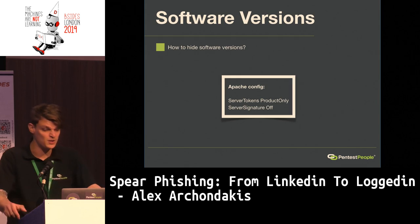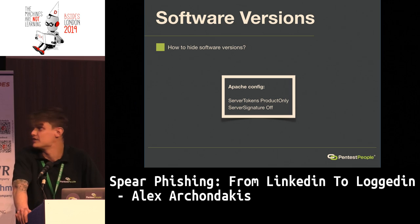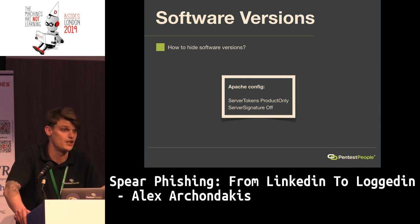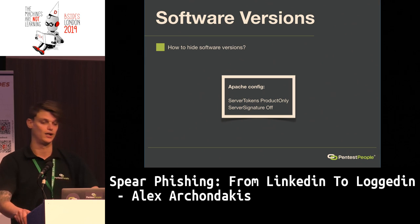Software versions are incredibly easy to hide. For example, in your Apache config you can simply turn server signatures off and set your server tokens to product only.